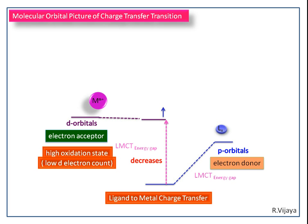The LMCT energy gap can also be reduced by using high energy non-bonding orbitals. For example, among the halo ligands, iodide can have high energy non-bonding orbitals, which reduces the LMCT energy gap.